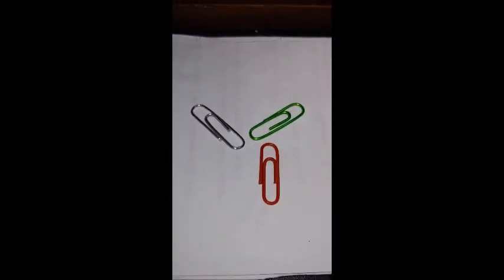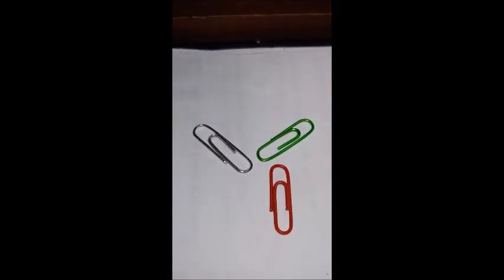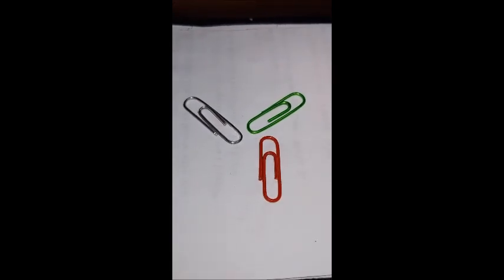The paperclip also can come in many different colors. So here we have the normal silver color because it's wire, green, and red. Sometimes the wire is coated, and other times paperclips are made out of plastic.